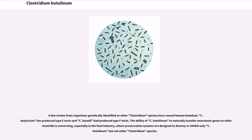A few strains from organisms genetically identified as other Clostridium species have caused human botulism. C. butyricum has produced type E toxin and C. baratii has produced type F toxin. The ability of C. botulinum to naturally transfer neurotoxin genes to other Clostridia is concerning, especially in the food industry, where preservation systems are designed to destroy or inhibit only C. botulinum but not other Clostridium species.